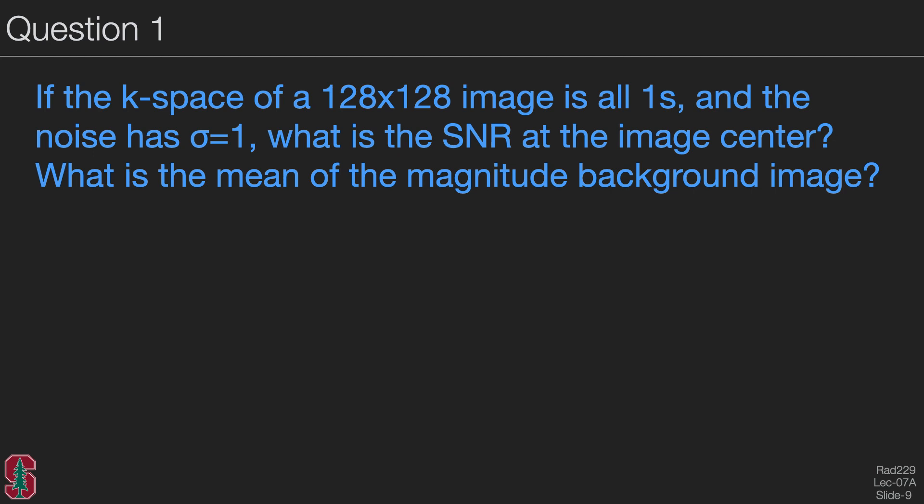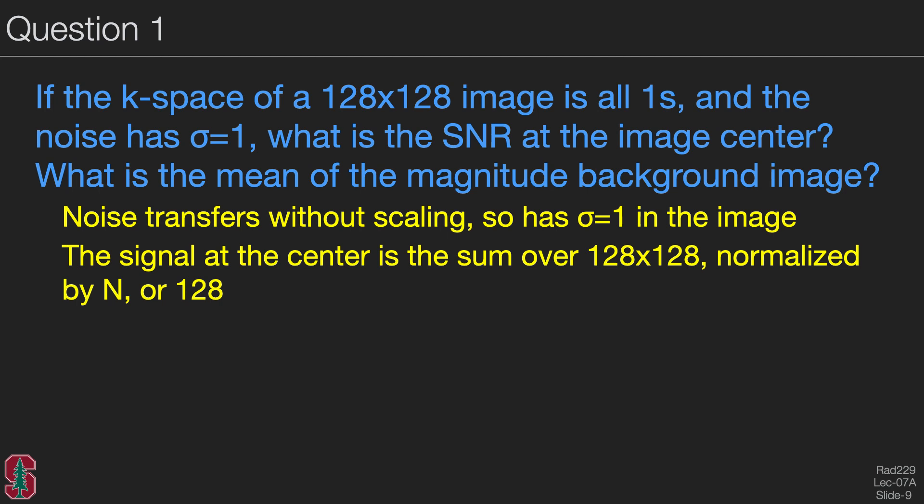A question example: If the k-space of an image that is 128 by 128 is all 1s and the noise has parameter sigma of 1, what is the SNR at the center of the image and what is the mean of the magnitude background image? The answer is that noise transfers without scaling, so it has sigma equals 1 in the image. The signal at the center is the sum over 128 by 128 normalized by n, so the signal-to-noise ratio is 128. The background mean is sigma times the square root of pi over 2, or about 1.2.